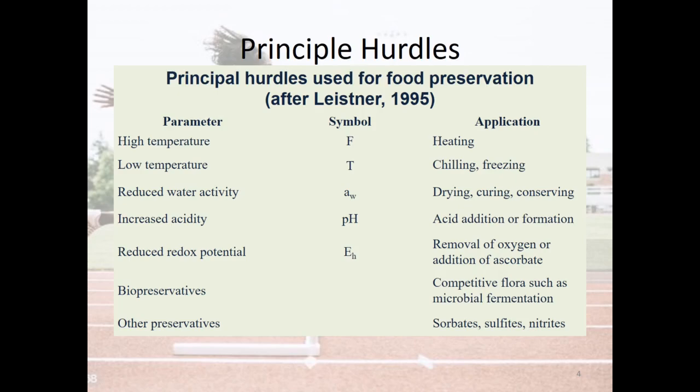Biopreservatives improve competitive flora, such as through microbial fermentation. Other preservatives used include chemical preservatives such as sorbates, sulfites, and nitrates. These—high temperature, low temperature, reduced water activity, increased acidity, reduced redox potential, biopreservatives, and chemical preservatives—are the important hurdles used in hurdle technology.